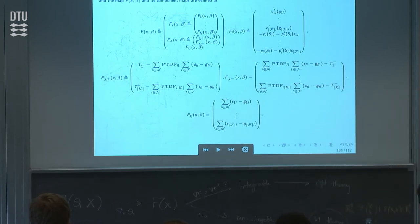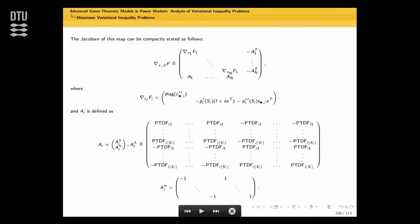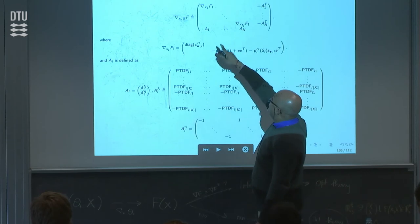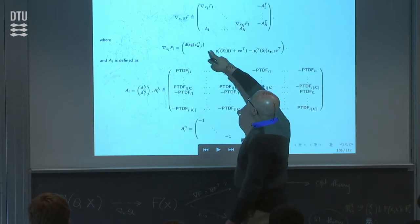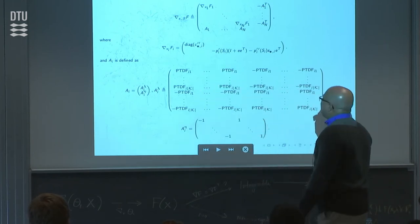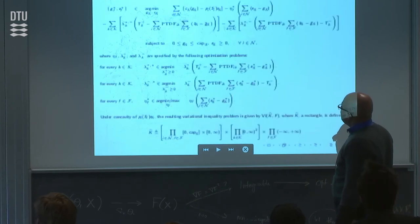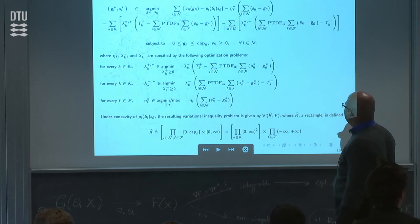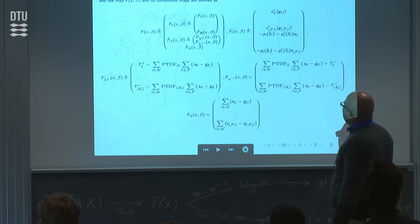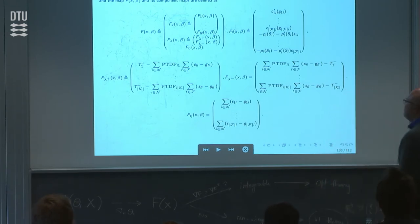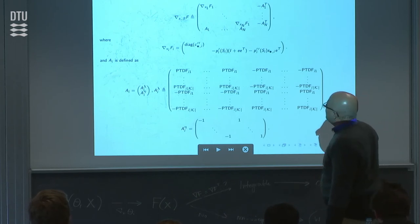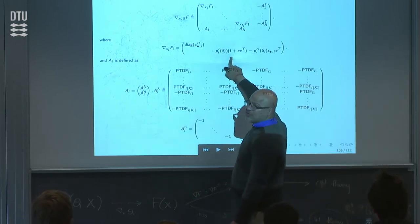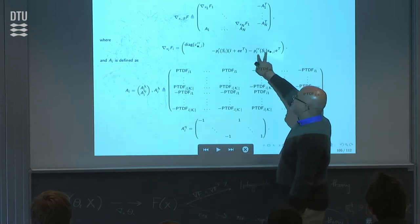The Jacobian is compactly stated in block form. Taking each block: the Hessian of cost, the Hessian of sales. In affine Nash-Cournot, P of s equals a minus b*s, so P prime of s is minus b (constant) and P double prime of s is zero—so the sales Hessian term is zero. But with a nonlinear demand function, P prime is not constant and P double prime is nonzero. These A_i matrices come from the PTDFs—a fairly elaborate matrix structure.